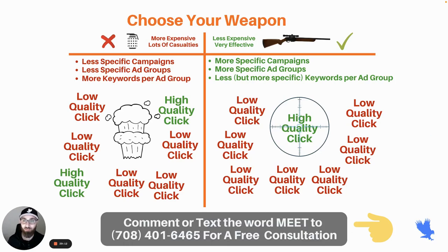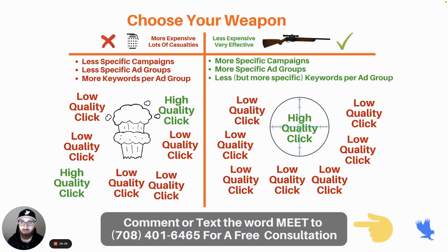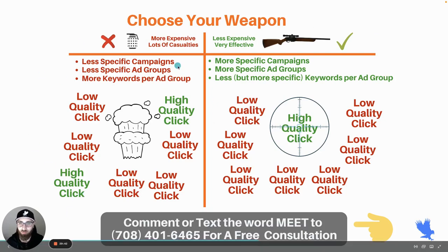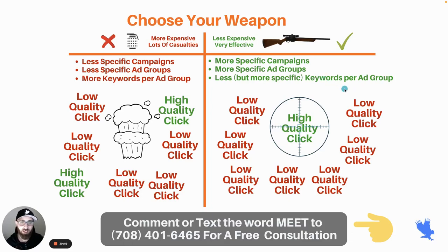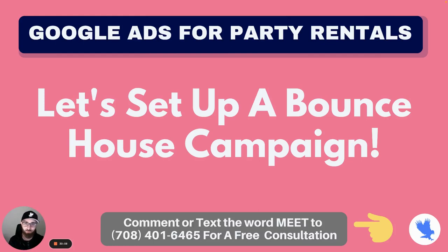You have to choose what you want. You can hunt for clicks with a grenade or with a sniper. With a grenade you'll get a ton of clicks but a lot of low quality — someone searching 'house rentals' or Airbnb might click your ad. You could set up a Google Ads campaign in five minutes that way. But it's better to take your time and set it up like a sniper: more specific campaigns, more specific ad groups, fewer but more specific keywords. Now let's actually set up a bounce house campaign — I'm going to share my screen and you'll look over my shoulder.